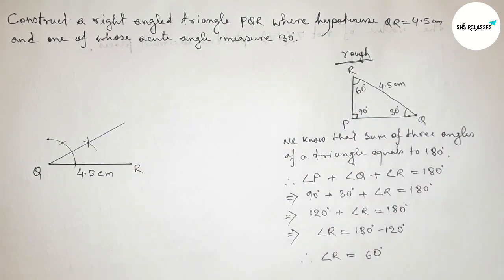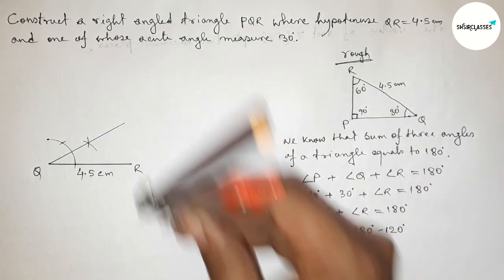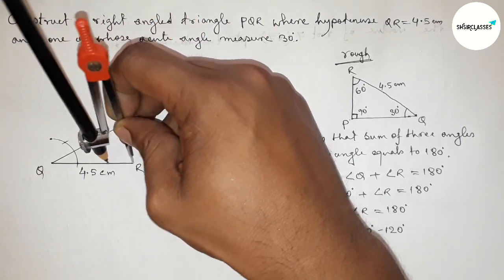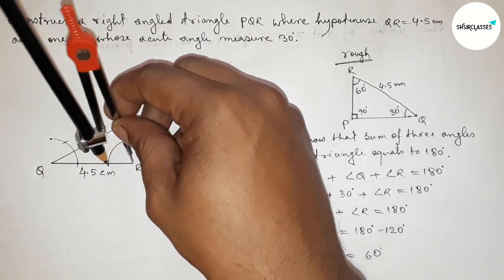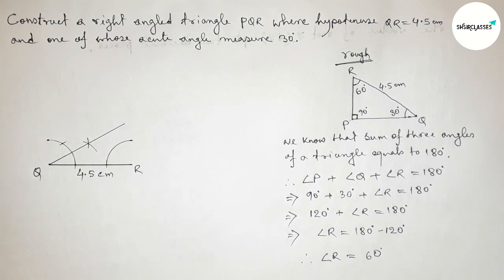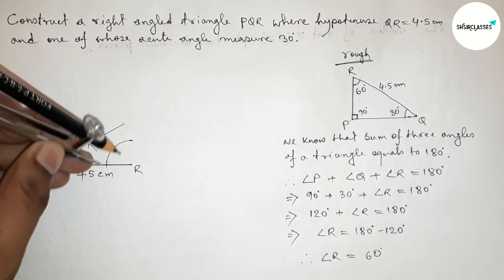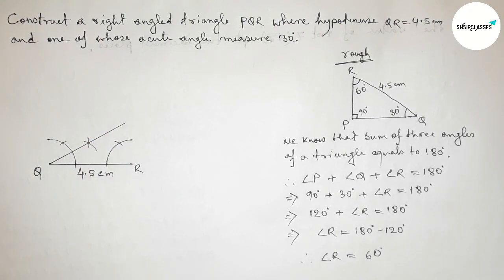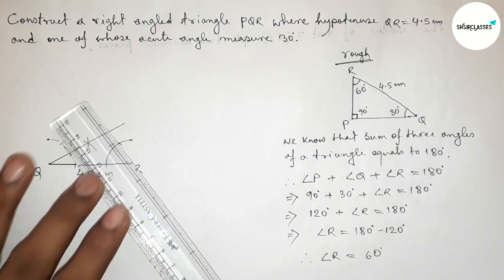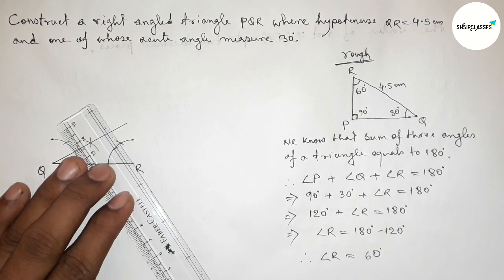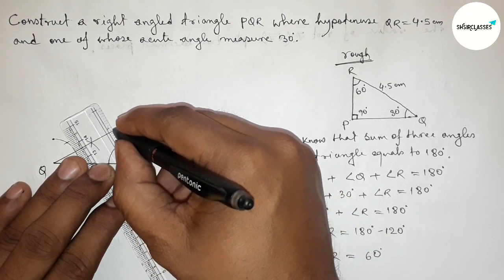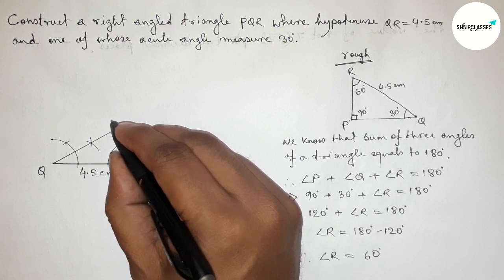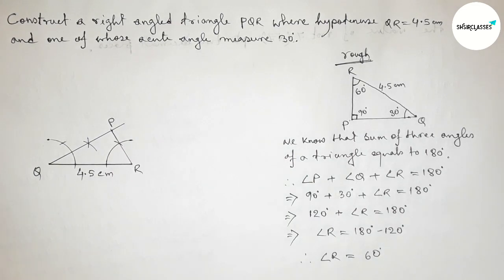Similarly, we draw a 60-degree angle at point R. Placing the compass on R, taking any length, drawing an arc, then placing the compass at the arc intersection with the same length and cutting another arc. Joining this line gives a 60-degree angle at R. Both lines meet at a point, which we label as point P.